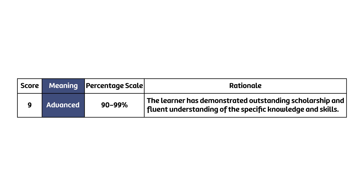Let's go back to our rating scale. The 90–99 range represents advanced understanding, and the rationale is that the learner has demonstrated outstanding scholarship and fluent understanding of specific knowledge and skills. Therefore, if a student can successfully reason through the 100-level question, they have shown at minimum advanced understanding. It's then just a matter of finishing off those 90-level questions to move higher up the rating scale.